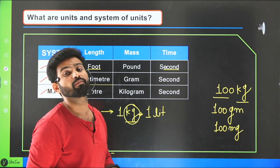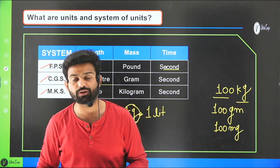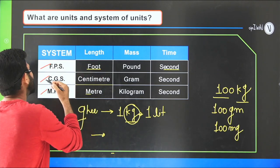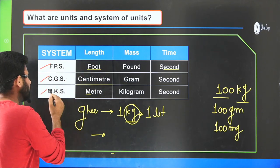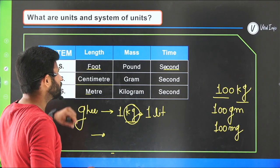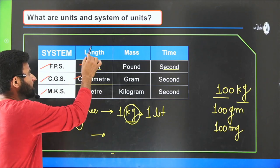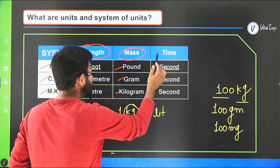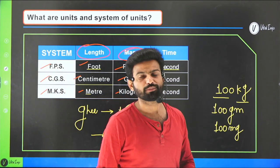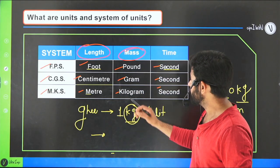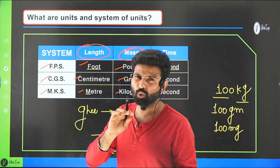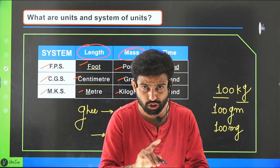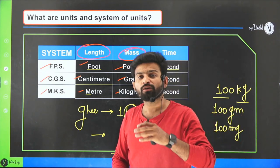In the FPS system, length is measured in foot, mass in pound, and time in second. In CGS, length is in centimeter, mass in gram, and time in second. In MKS or SI, length is in meter, mass in kilogram, and time in second. These three systems of units are interchangeable with each other by changing numerical values.